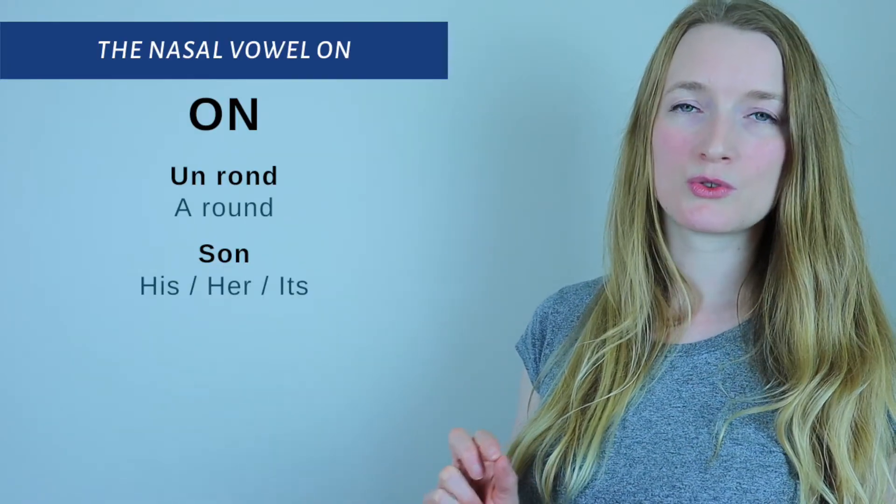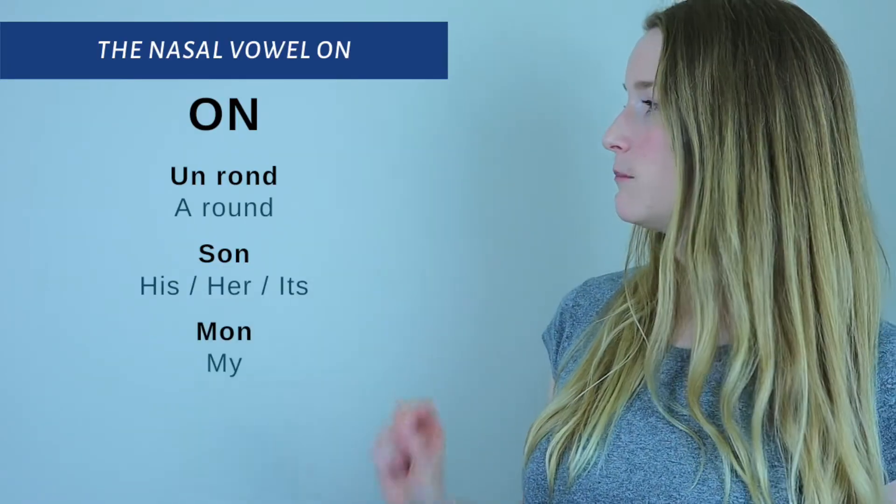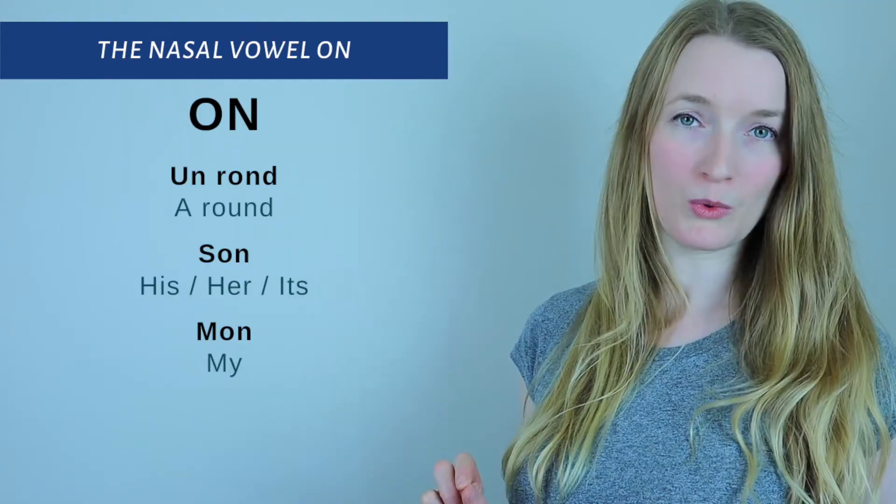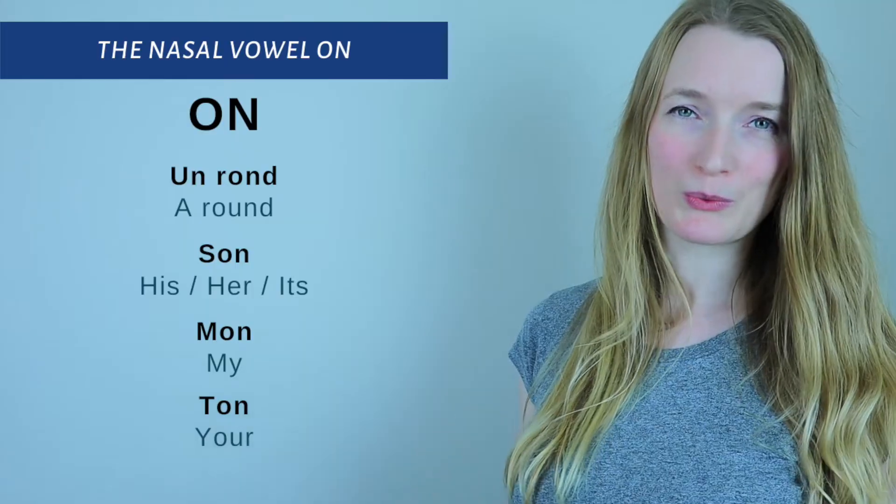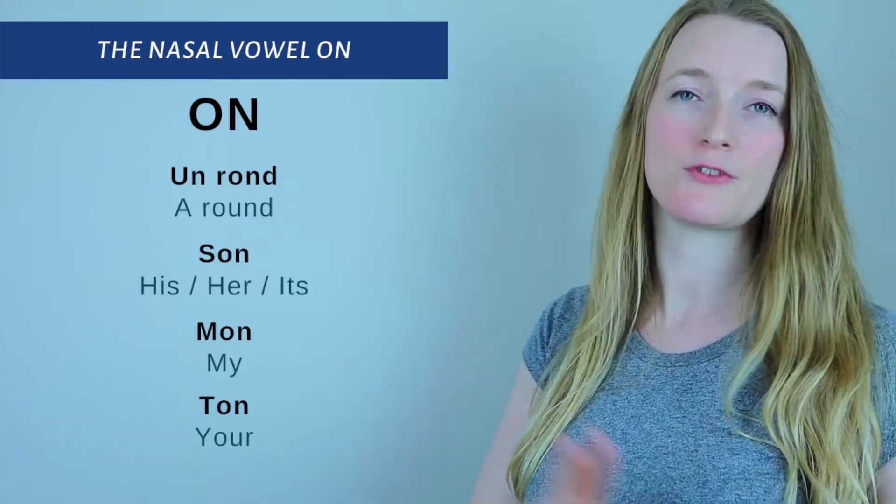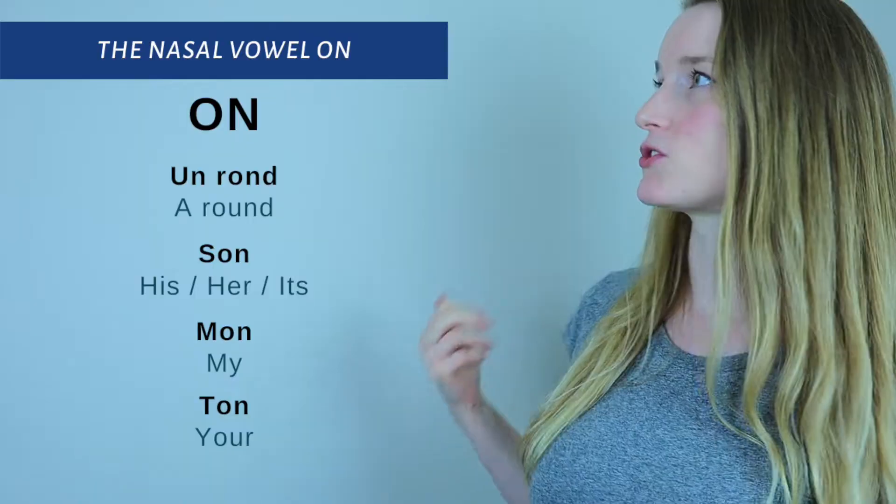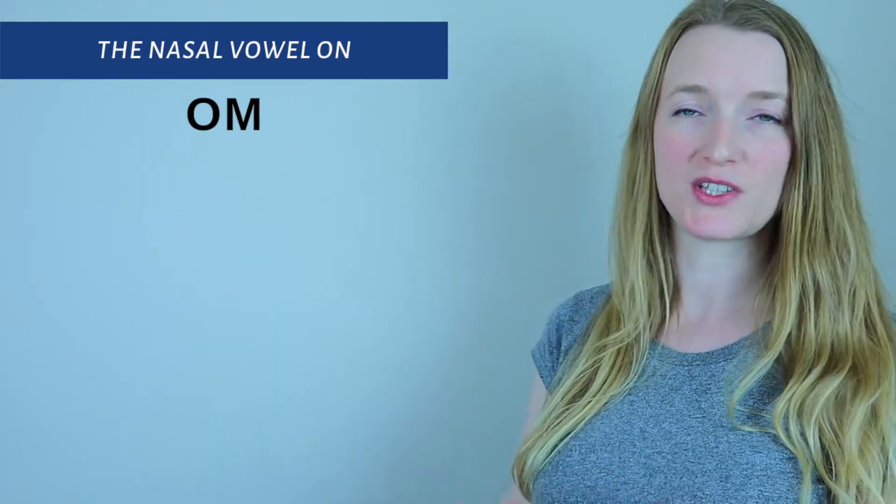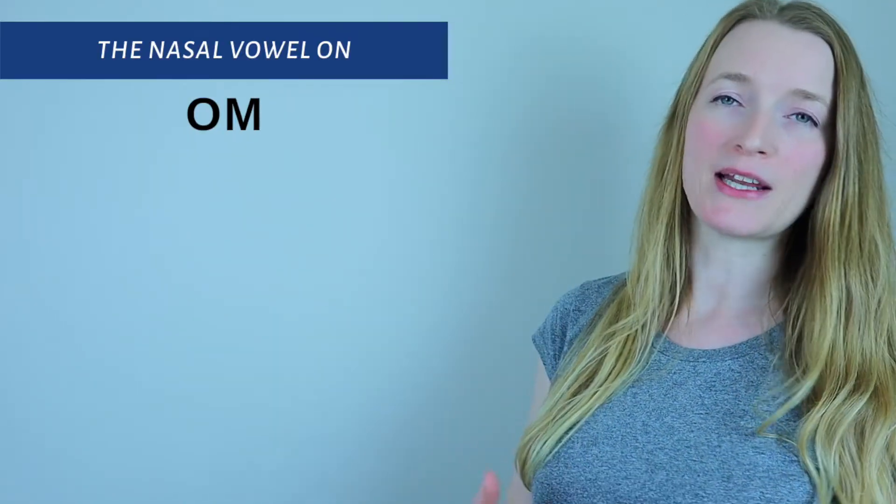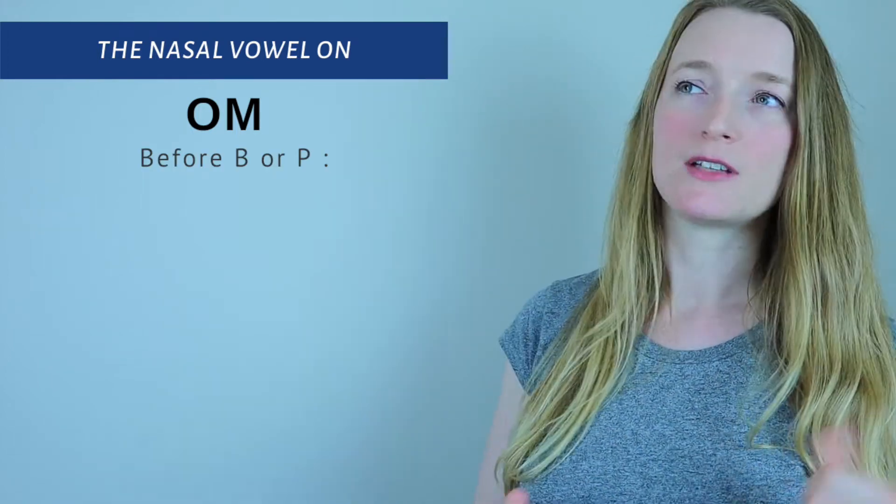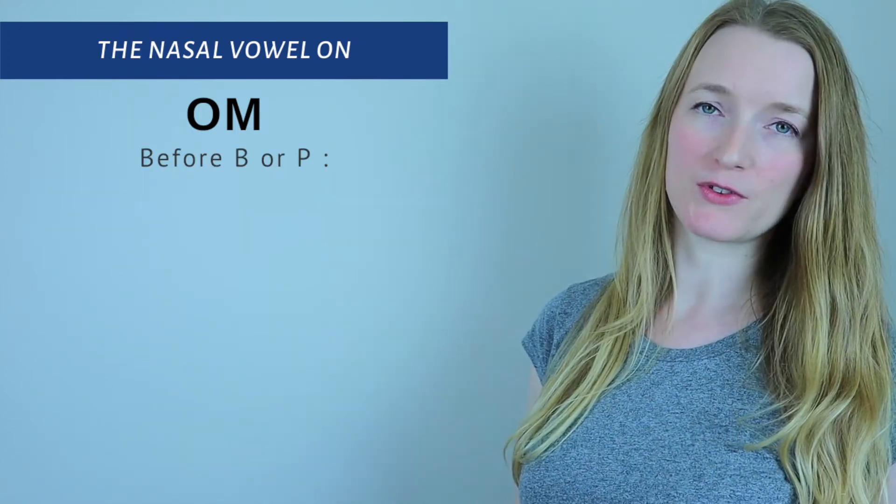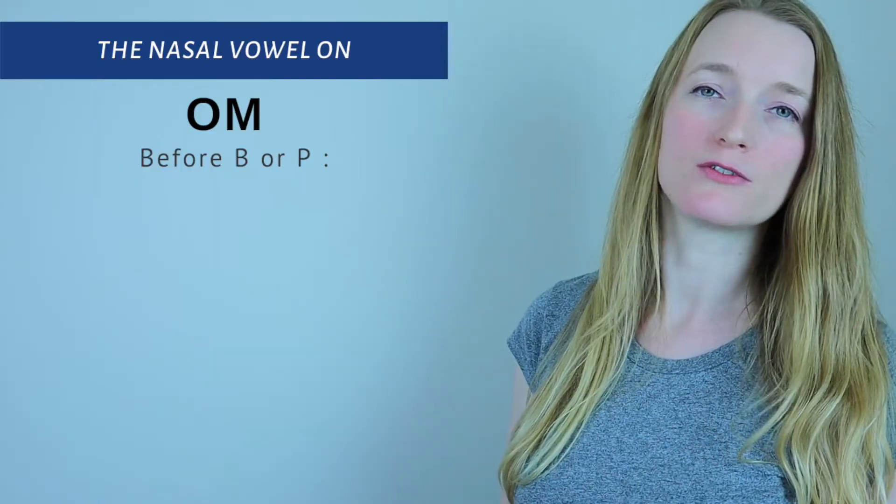Un rond, un rond, un rond. And then we have: Son, son, son. Mon, mon, mon. And then: Ton, ton. So like I said, the sound ON can have two different spellings. We just saw ON, now we are going to see OM. And we spell it OM when it's before a B or a P. And also in one word that we are going to see that doesn't follow the rule of the B and the P.